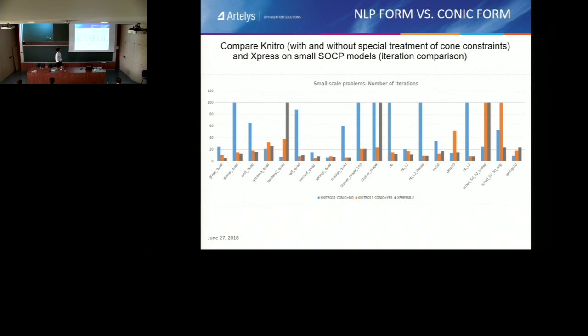Here are some performance results. We compare the old Nitro version, Nitro 10.3, with Nitro 11 and the conic algorithm, and with Express. On several problems, as you can see, we reach in terms of number of iterations the same performance as Express. Sometimes Express even gets worse — there are cases where you get the maximum number of iterations, meaning the problem is not solved. And in some cases, Nitro 11 or Express cannot solve, whereas with our new method, we can do it quite rapidly.